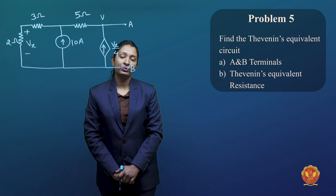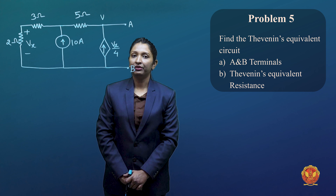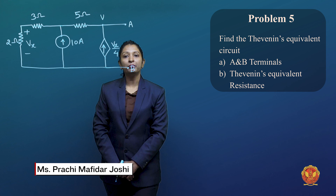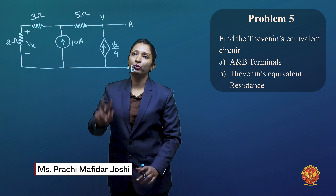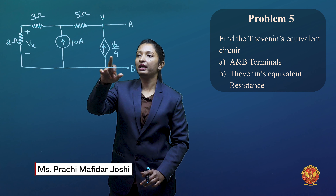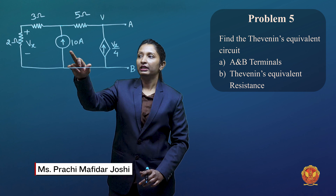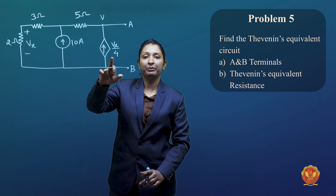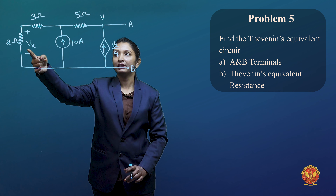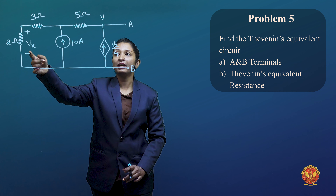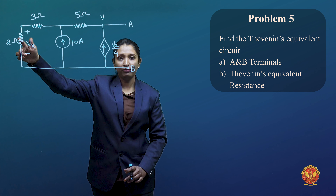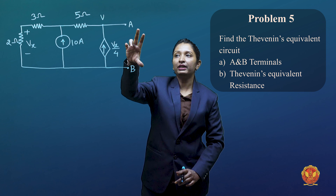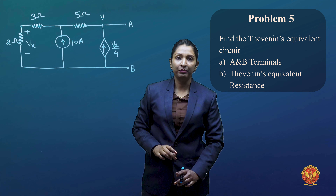This is Case 2 related to Thevenin's theorem — what happens with independent plus dependent sources. We can see here one source is independent, which is 10A, and one source is dependent, which depends on Vx. Vx is the voltage of the 2 ohm resistor. We have to find the Thevenin's equivalent across terminals A and B.